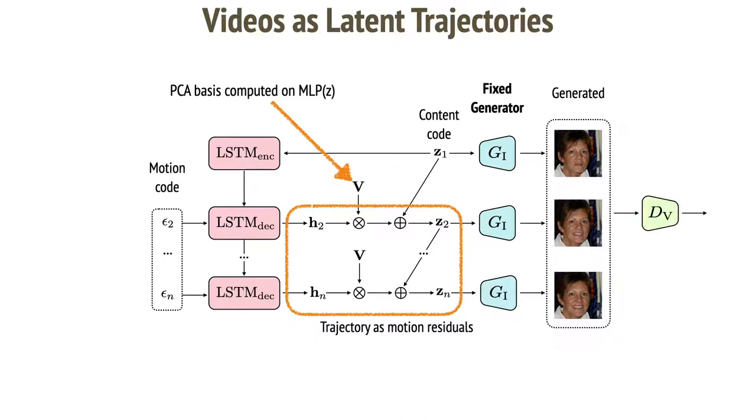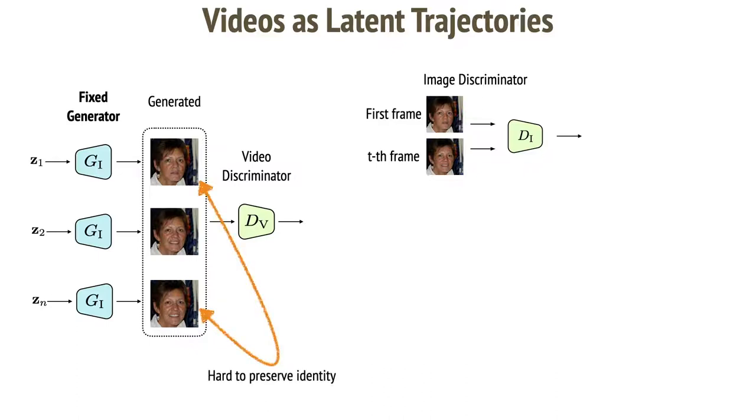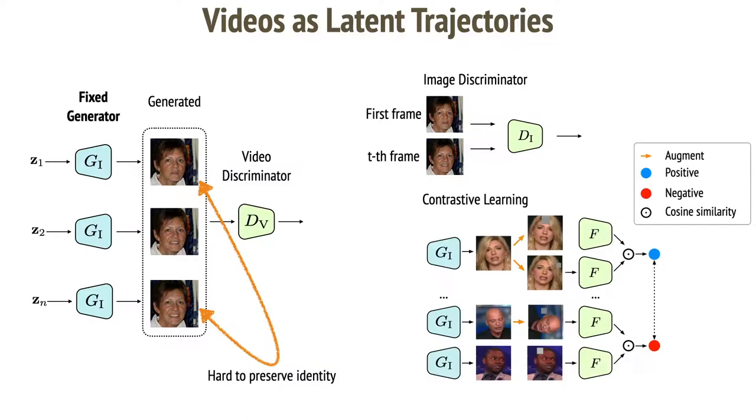We have ever noted that it can get discarded. To avoid this, we add mutual information constraint here. Now we can generate a video. We can train the framework using a video discriminator and an image discriminator similarly to MocoGAM framework. The latter, in addition to the randomly sampled frames, takes the first frame as the input. We noticed that in such framework it's very hard to preserve identity of the object.